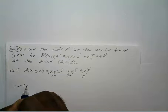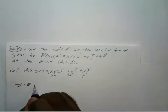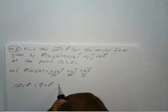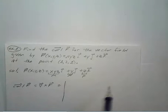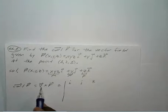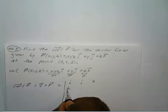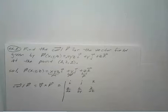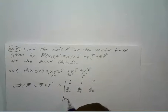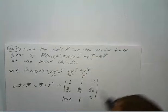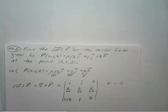The curl of our vector field — del cross our vector field — is equal to, using our matrix: first row is i, j, k; second row is partial with respect to x, partial with respect to y, partial with respect to z; third row is M = x·y·z, N = y, and P = z. Remember plus, minus, plus for the terms, and from here you're all set to go.